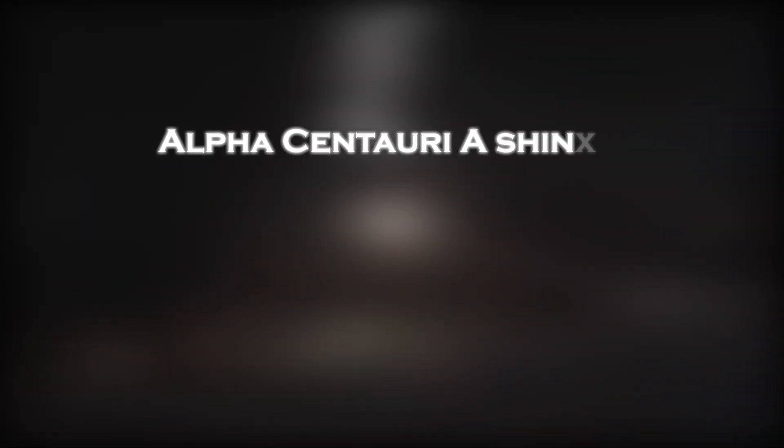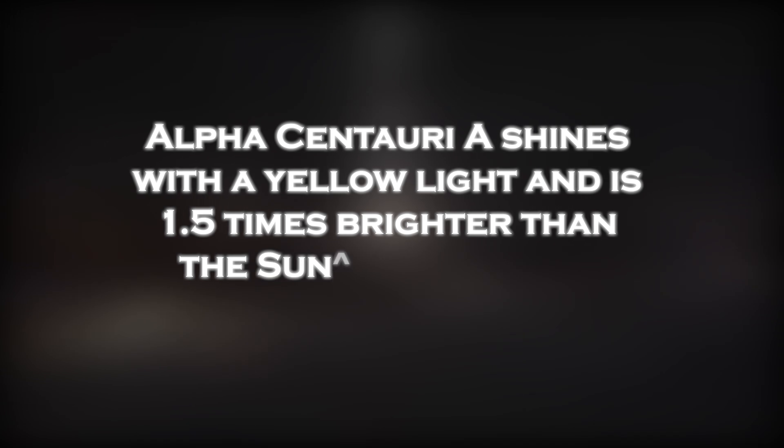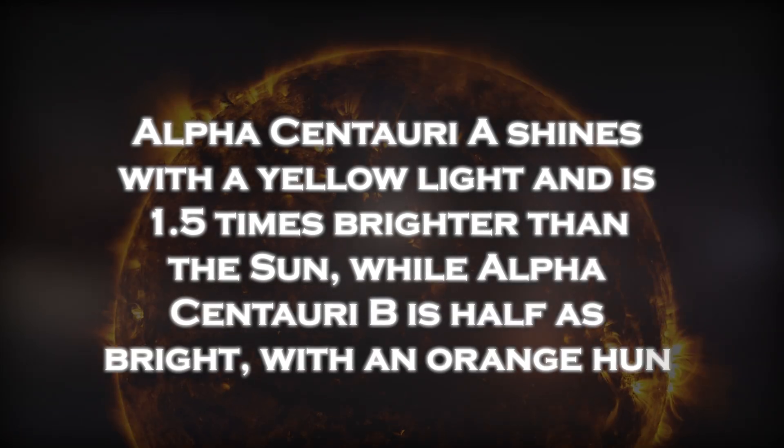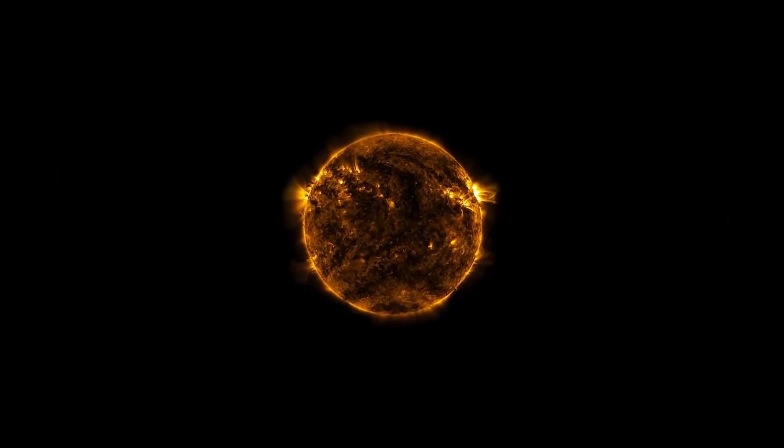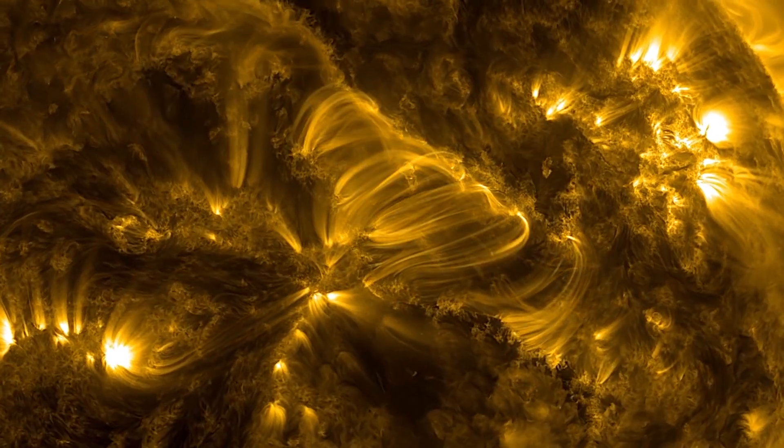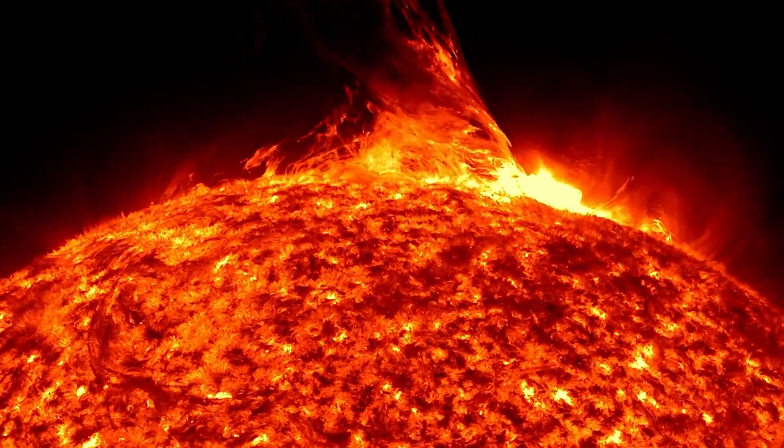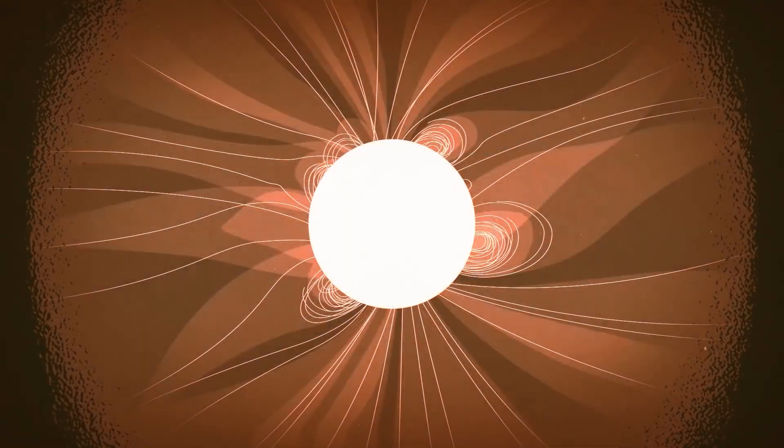Alpha Centauri A shines with a yellow light and is 1.5 times brighter than the Sun, while Alpha Centauri B is half as bright with an orange hue. Our Sun fits exactly between them in size. But where did the signal between these two stars come from?